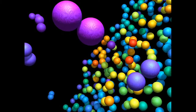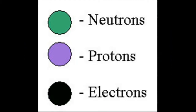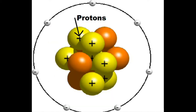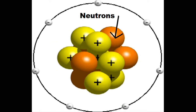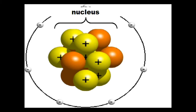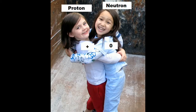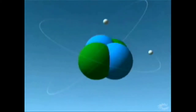Atoms are so very small, but they contain three things: protons, neutrons, and electrons — they are friends, you see. For protons stay with neutrons in the atom's nucleus, which is the center of the atom. Their friendship is a must.